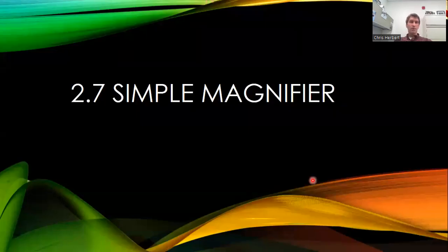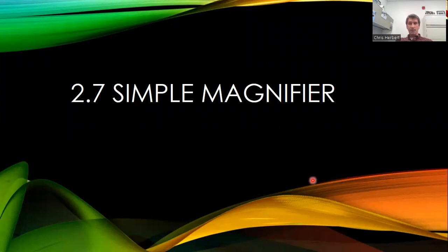Another short section, 2.7, the simple magnifier. And here we're going to take a convex lens and use it to magnify something close to the eye.